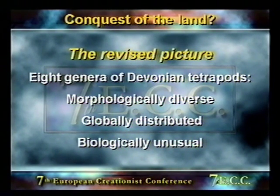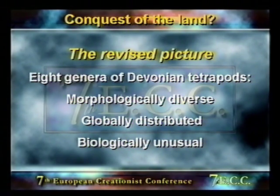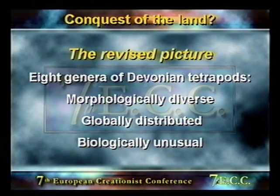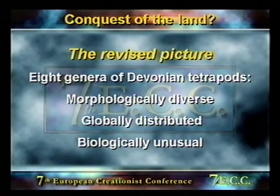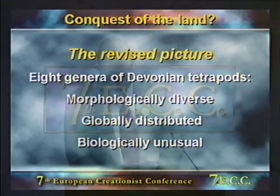They're globally distributed. We now have fossil material not only from East Greenland but from Scotland, America, Australia, Latvia, and Russia. Moreover, contrary to the older view of Ichthyostega as a typical land-dwelling vertebrate, it appears that the Devonian tetrapods were very unusual, peculiar animals indeed.